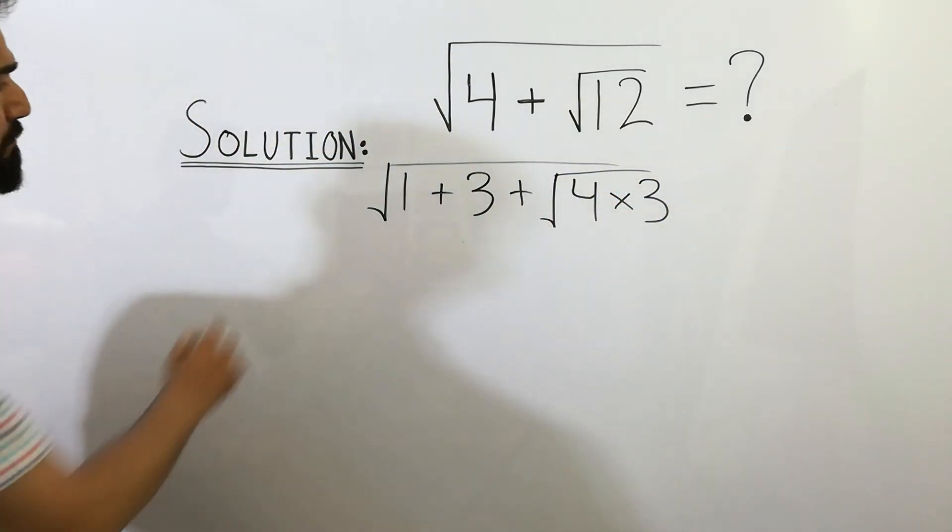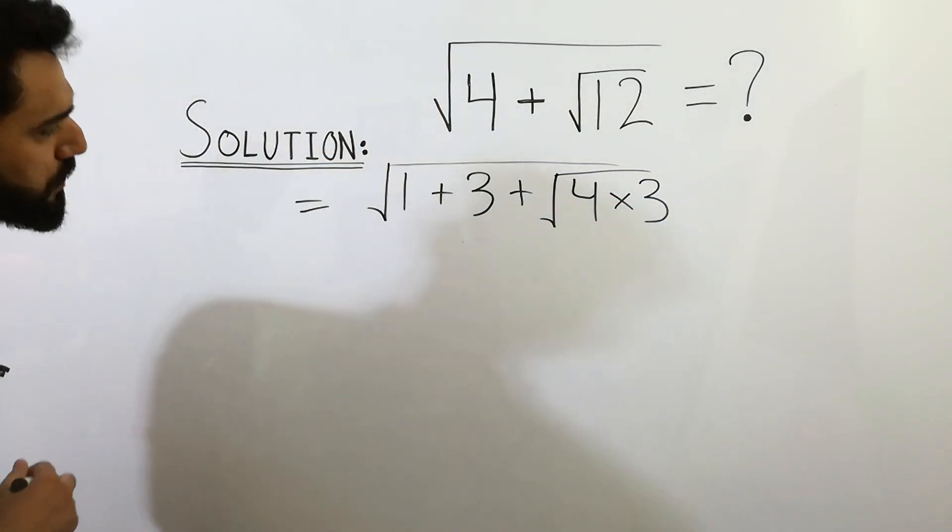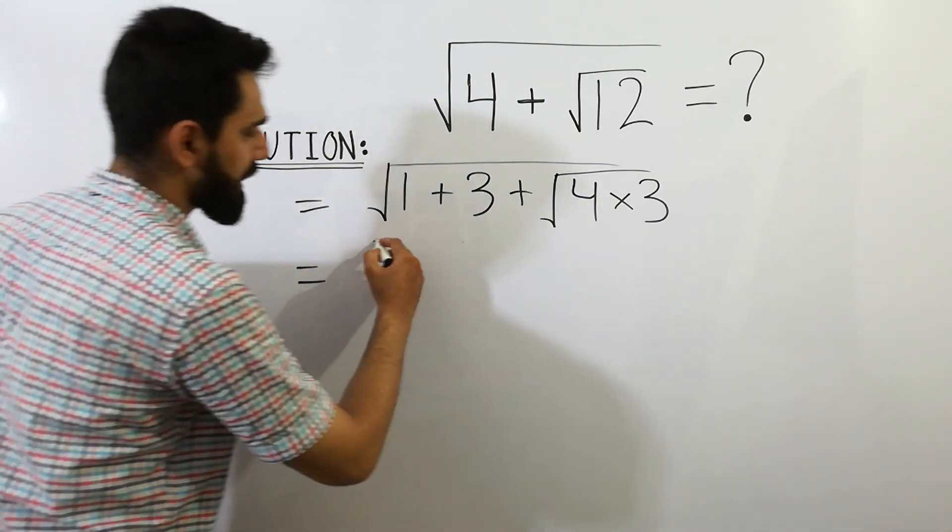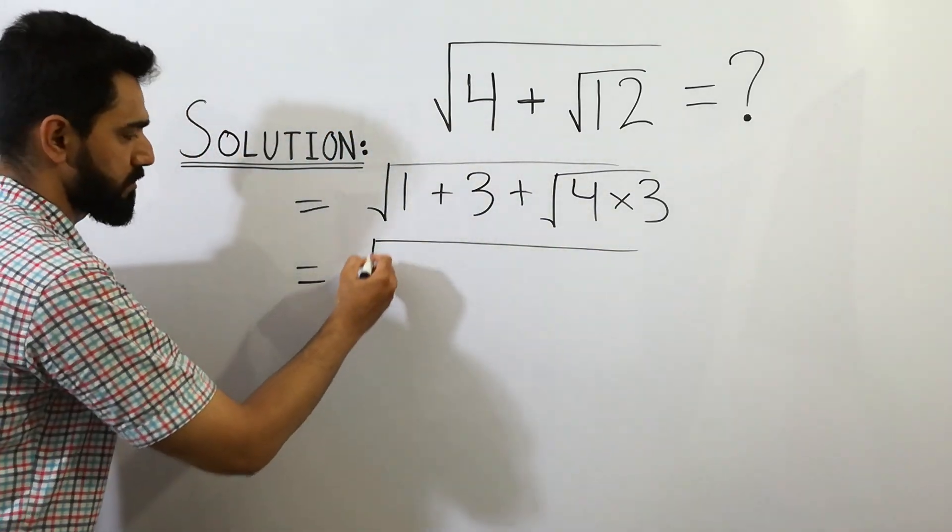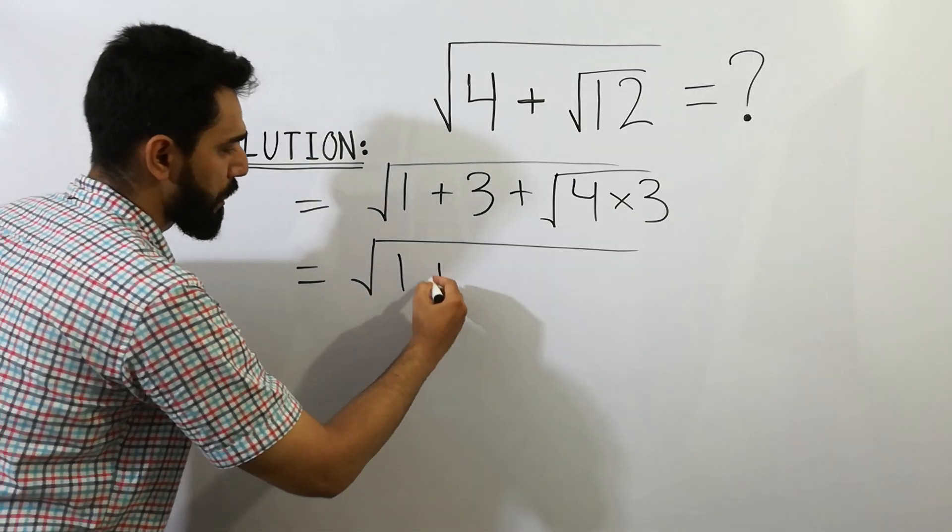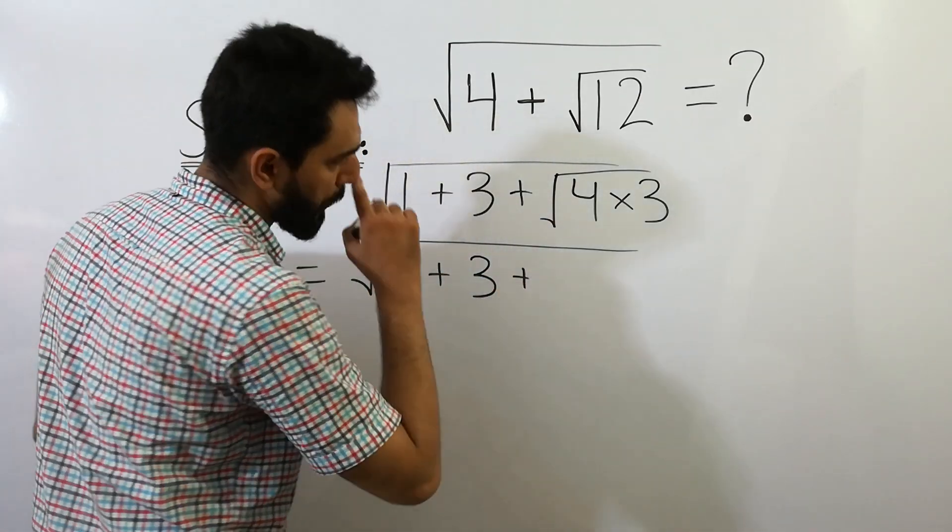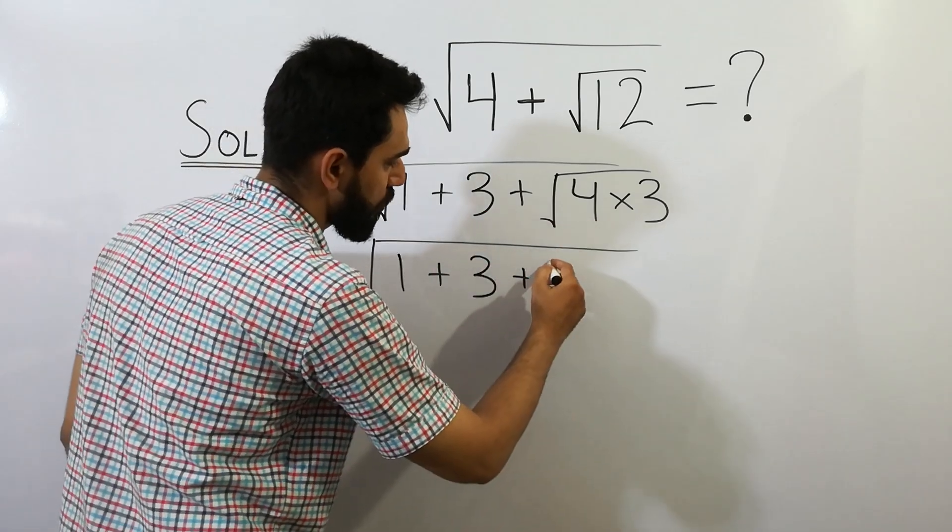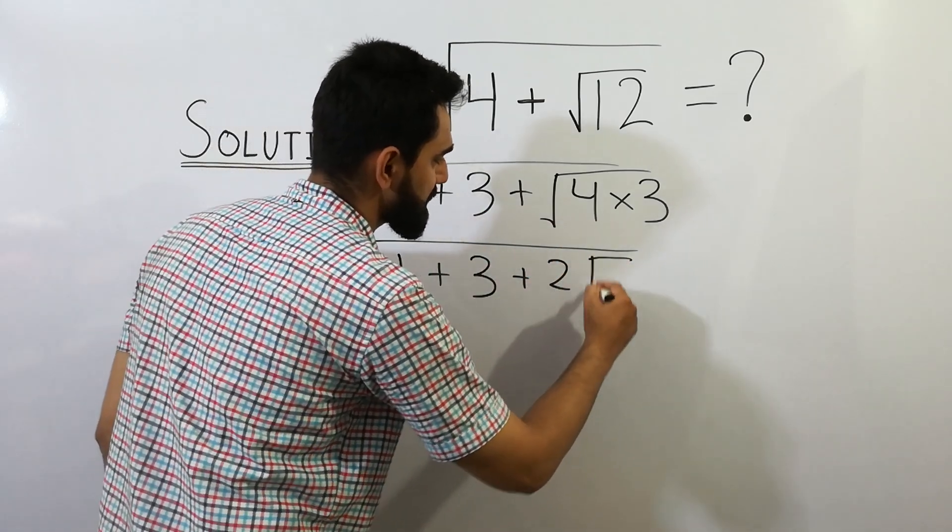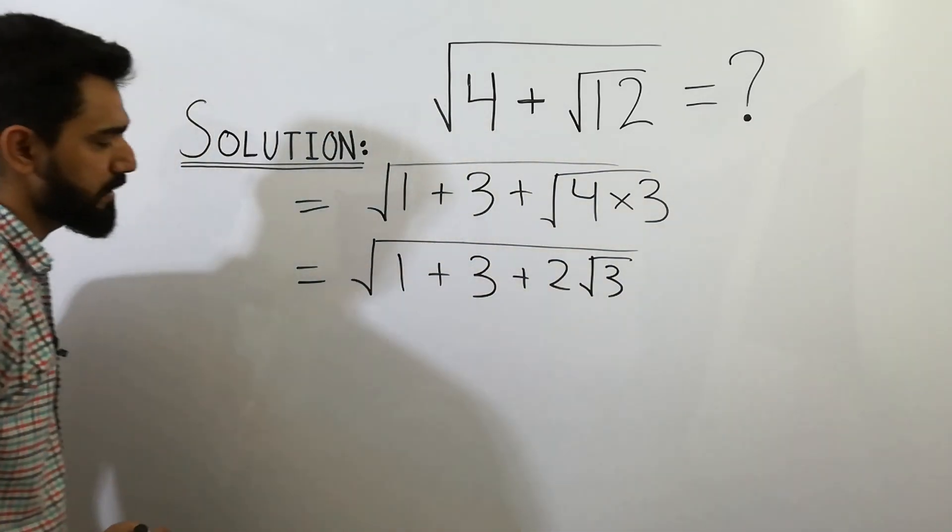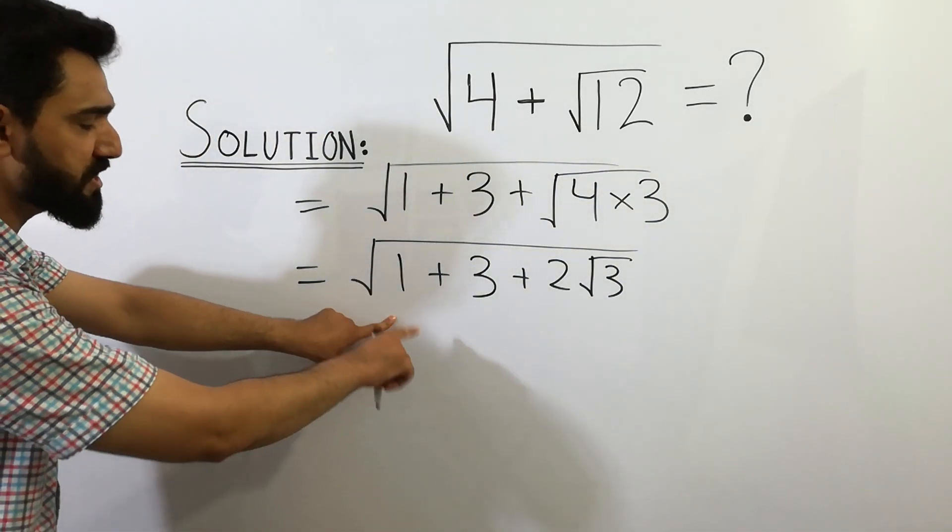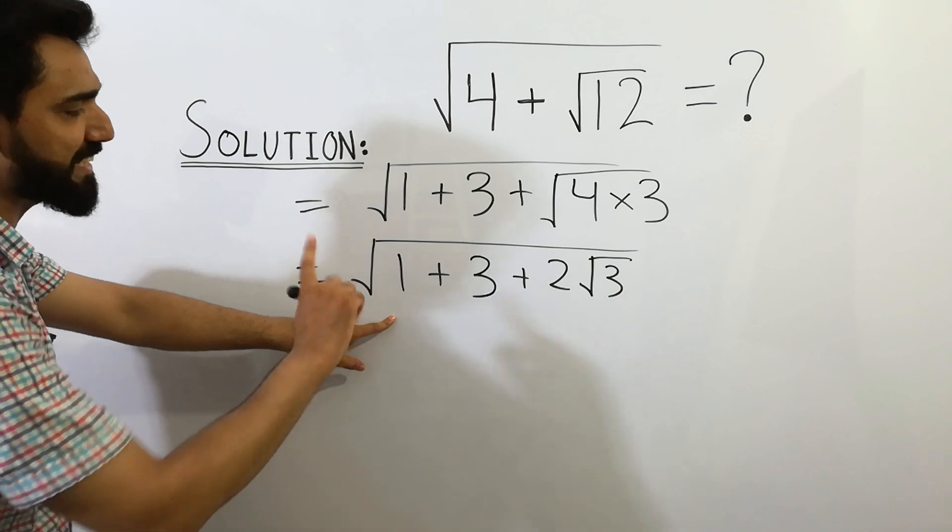In the next step, we can write square root of 1 plus 3, plus 2 square root of 4 equals 2 square root of 3. We can convert this equation into